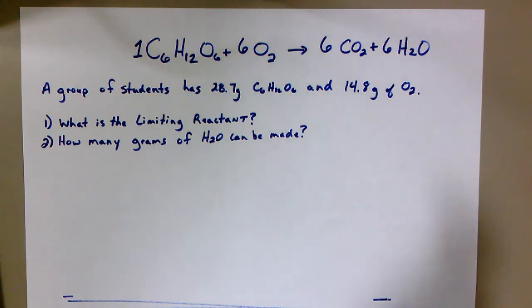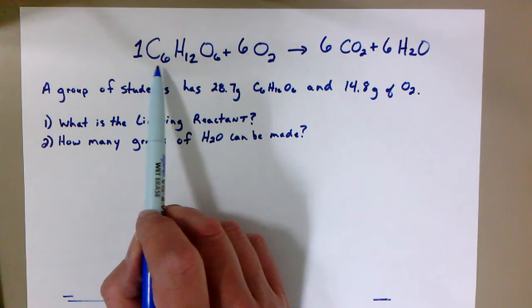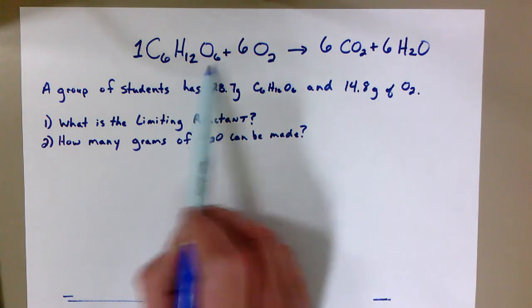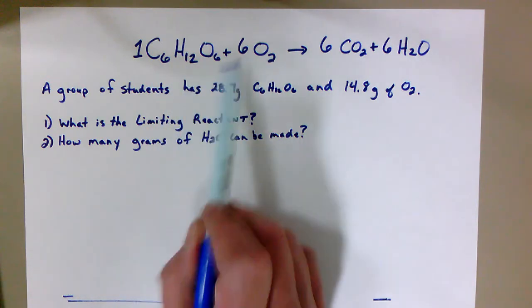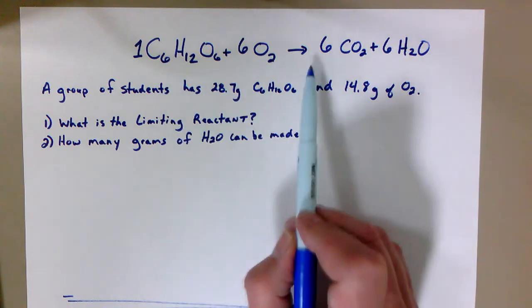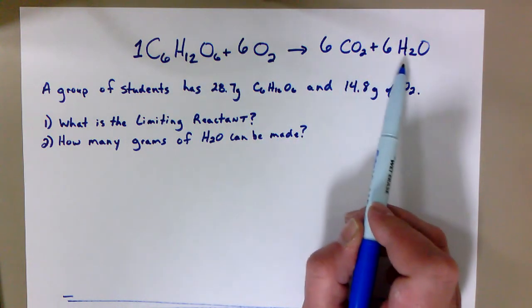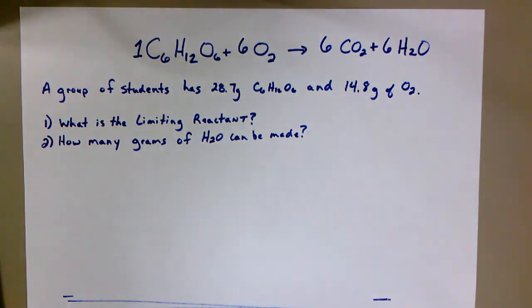We have a question here where we have C6H12O6 plus 6O2, those are our ingredients, and those will react to form 6CO2 and 6H2O. So we have our chemical recipe, our chemical equation.